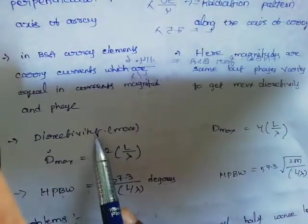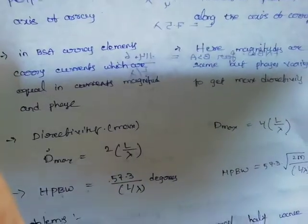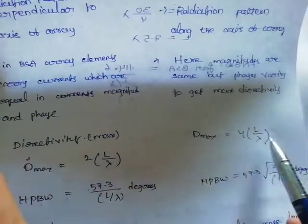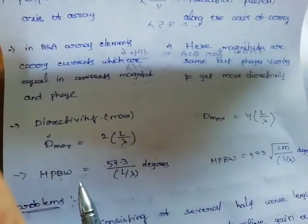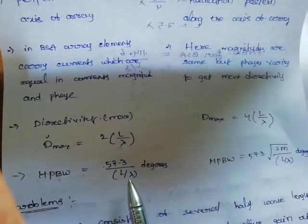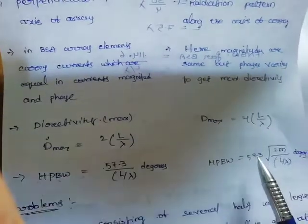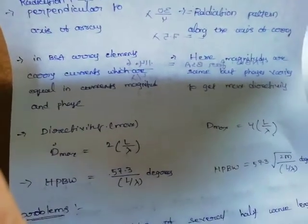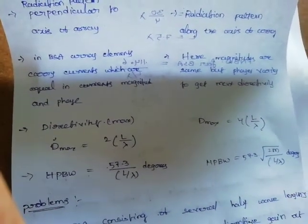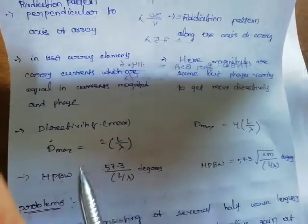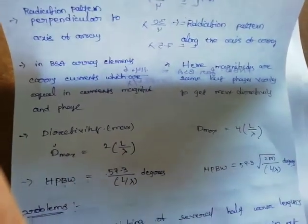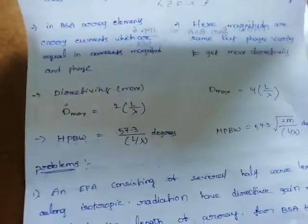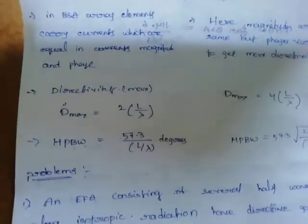Key formulas for comparison: directivity (maximum directivity gain) for broadside array is 2·(L/λ), where L is the length of the array. For end fire array it is 4·(L/λ). Half-power beam width for broadside array is 57.3·√(3/(L/λ)) degrees, and for end fire array it is √(2m·(L/λ)) — related formulas. You can refer to your material for the complete set of formulas.